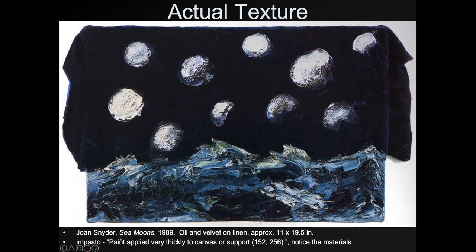She's using what's called impasto — paint that is applied very thickly to the canvas. The canvas in this case is actually velvet on linen. Velvet is very smooth, and then she puts this heavy, chunky paint on there, which you would run your hand across and it would be very bumpy. So there's a big change in texture between the background surface and the paint.